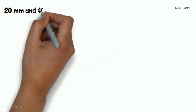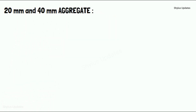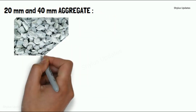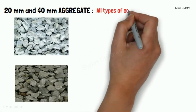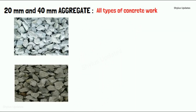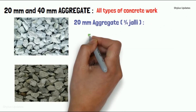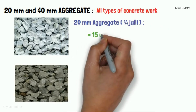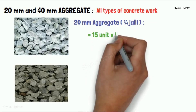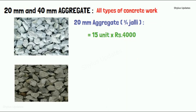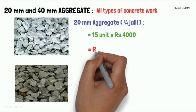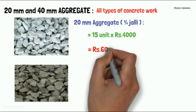20mm aggregate and 40mm aggregate are used in all types of concrete work. For an 850 square feet house, 15 units of 20mm aggregate is required. The current market rate of 20mm aggregate is Rs. 4,000. So when you multiply 15 units into Rs. 4,000, you get Rs. 60,000.